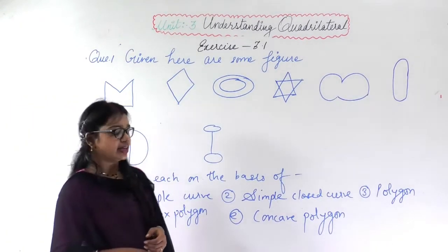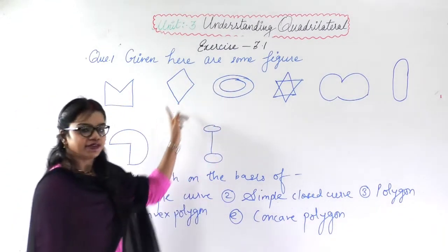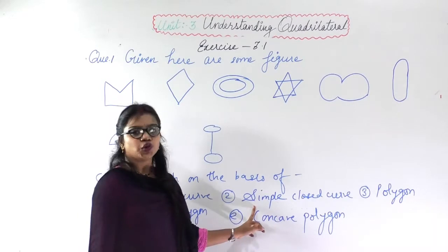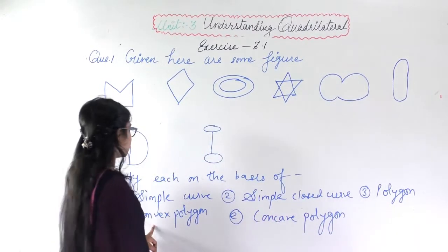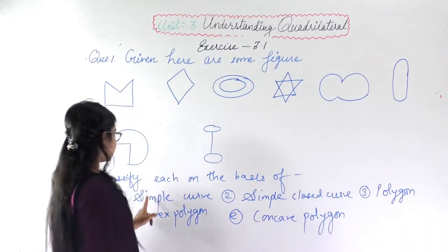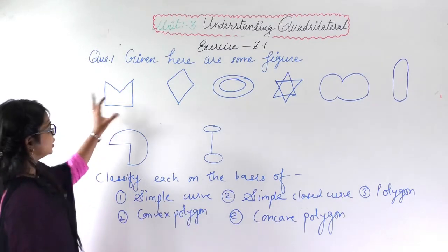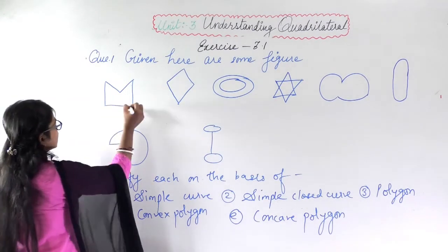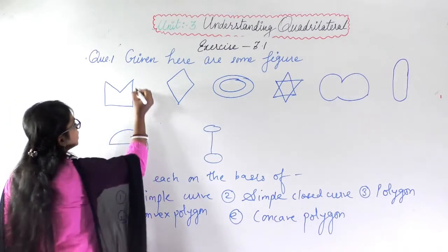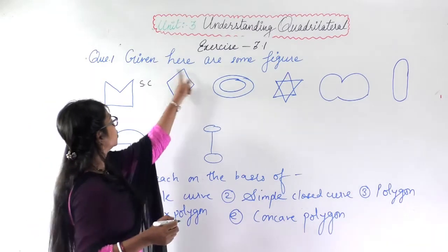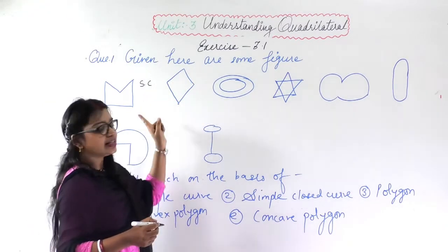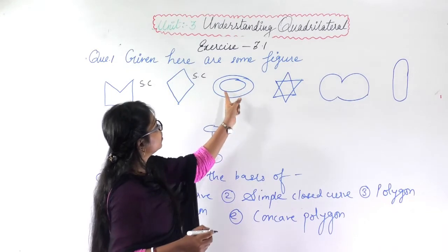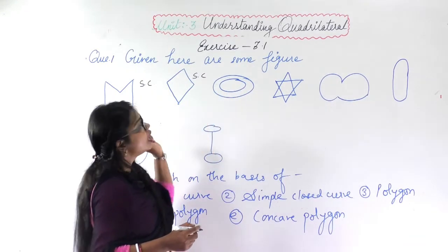This is Exercise 3.1. The first question says: given here are some figures, classify each on the basis of simple curve, simple closed curve, polygon, convex polygon, and concave polygon. Let's start with simple curve — it should consist of line segments or curves. The first figure consists of line segments and is closed, so it is a simple curve. The second is also a closed loop made of line segments — a simple curve. The third has two separate closed curves not connected, so it is not a simple curve.